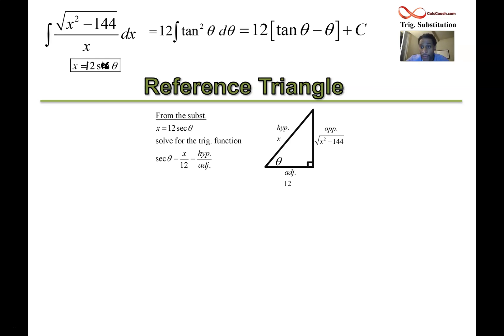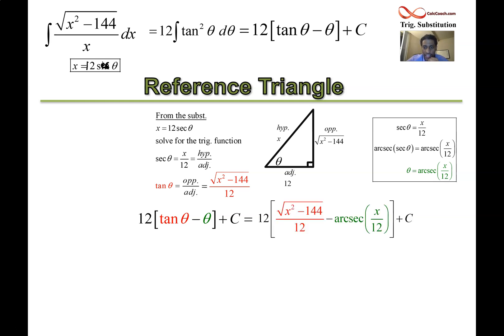We have to sub for tan theta, which we know is opposite over adjacent. So that's going to be the radical x squared minus 144 over 12. But we also have to sub for theta. The way we get theta is by taking the original trig sub, x equals 12 sec theta, dividing by 12, isolating the trig, and taking the inverse trig. In this case, arc secant. And so theta is the arc secant of x over 12. That's going to be the replacement to theta. The replacement to tangent in red is that fraction there. The plus C is on the end. The 12 is still outside.